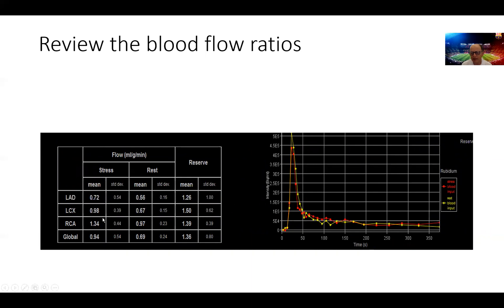But there is a failure of augmentation of flow in the stress images specifically in the CIRC and LAD where we can see these mean flows well below our cutoff of 1.8 in all segments but predominantly in the LAD where we identified ischemia and some in the CIRC and the RCA too.